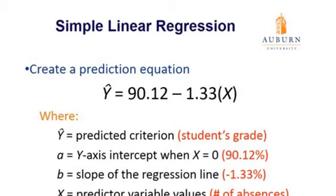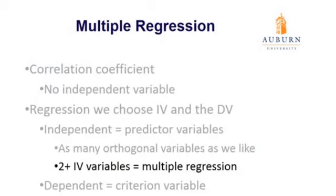Before we end the lecture, let's briefly talk conceptually about multiple regression. With regression, we're not limited in the number of predictor variables — we can have as many as we like, as long as they're uncorrelated with each other. If we have more than one predictor variable, we have what's called multiple regression — multiple predictors for our outcome. We might add another predictor to estimating a student's course grade. The more predictors we have, the better our estimate will be — the standard error of the estimate will decrease.